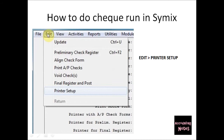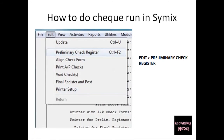Next, make sure your printer is set up correctly: go to Edit on the toolbar and click Printer Setup, then choose the printer you would like the preliminary check list to be printed from. After that, go back to Edit on the toolbar and click Preliminary Check Register.